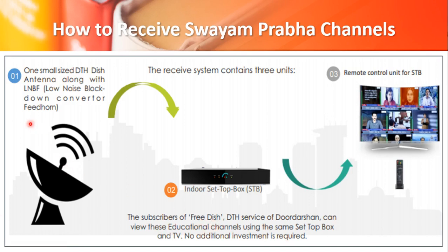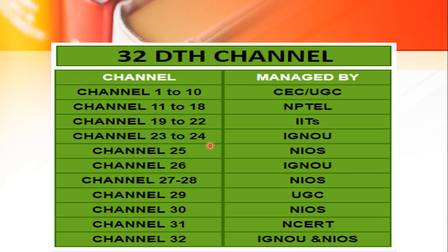To access Swayam Prabha channels, you can use your free dish antenna. The DTH service of Doordarshan allows you to view these educational channels using the same set-top box. If you already have Doordarshan DTH, you can access these channels. The 32 channels are assigned to different bodies — for example, channels 1 to 10 are managed by CEC, 11 to 18 by NPTEL, and channel 29 by UGC, which also deals with teacher training.